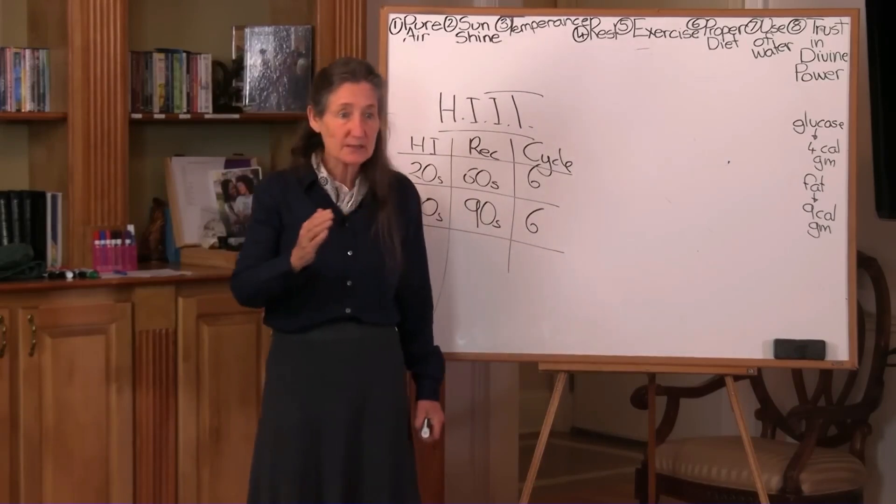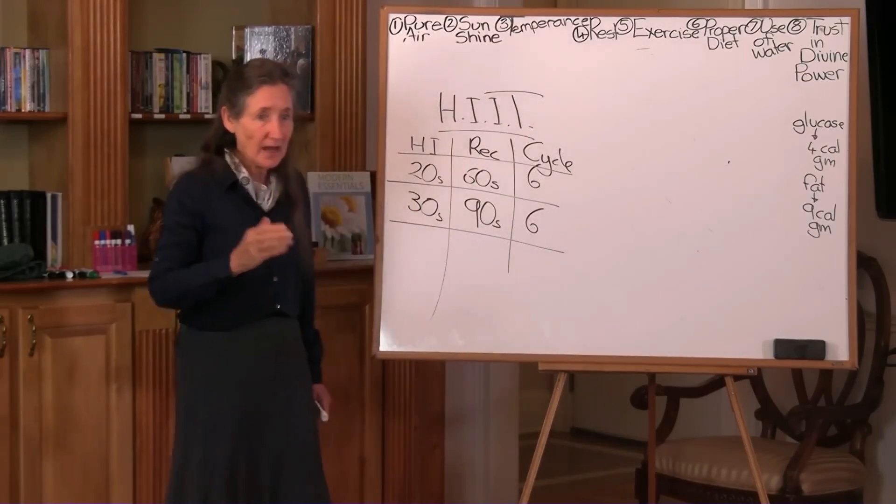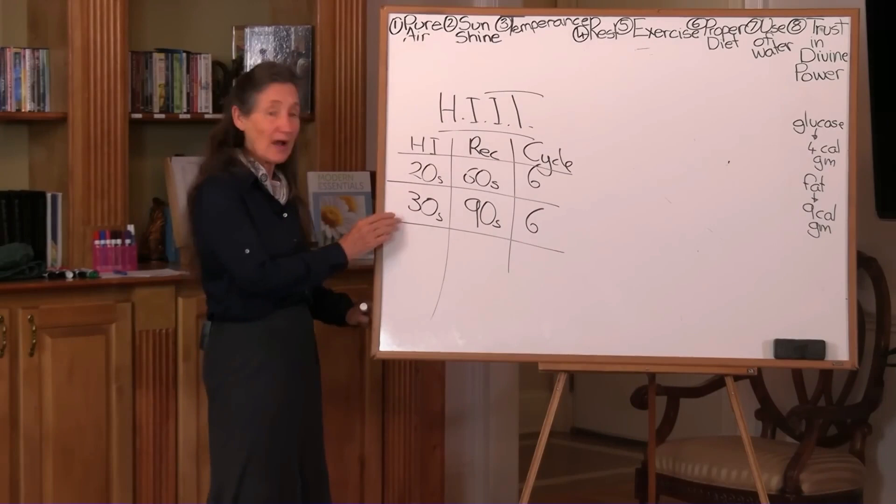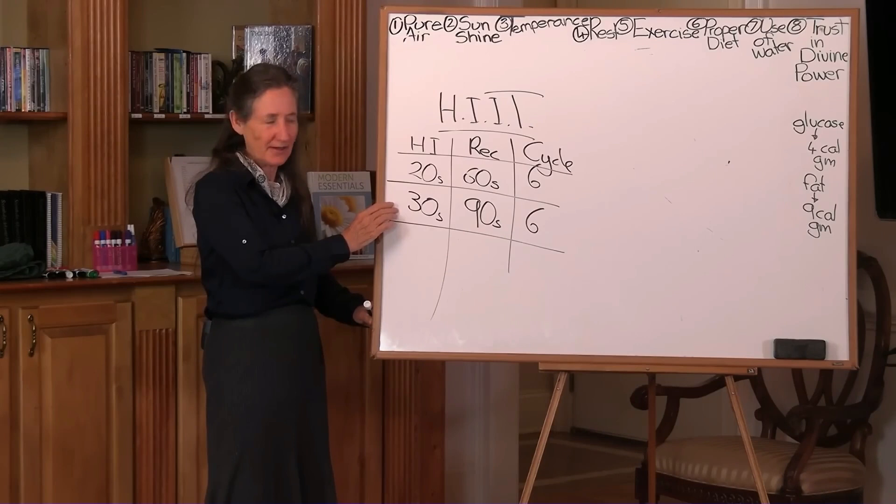So PACE is P for progressive. A is acceleration. You are accelerating. This is no gentle stroll.